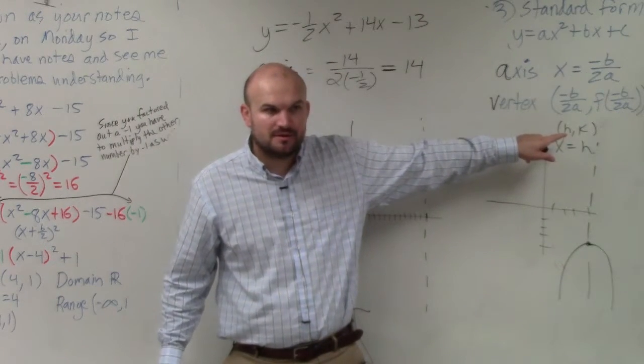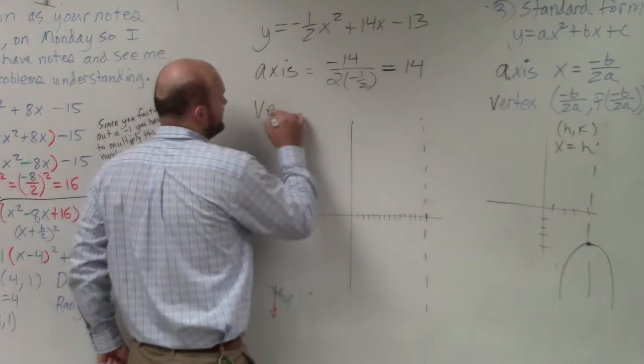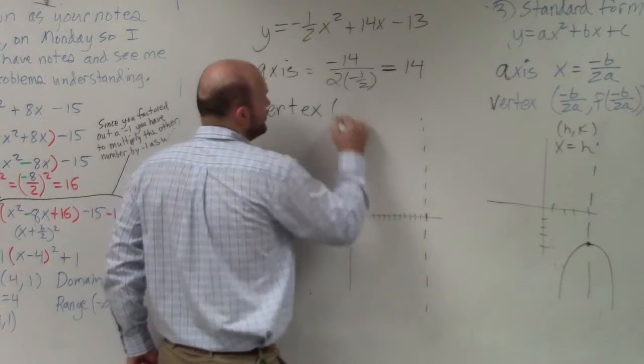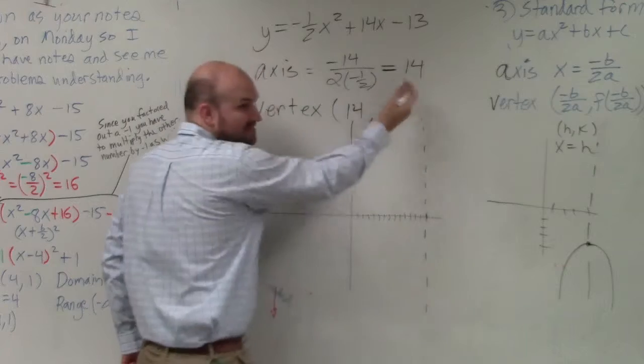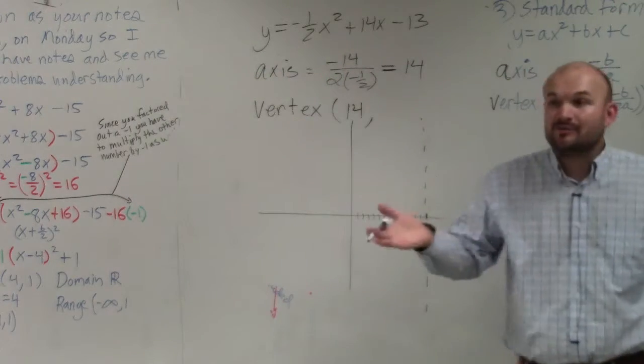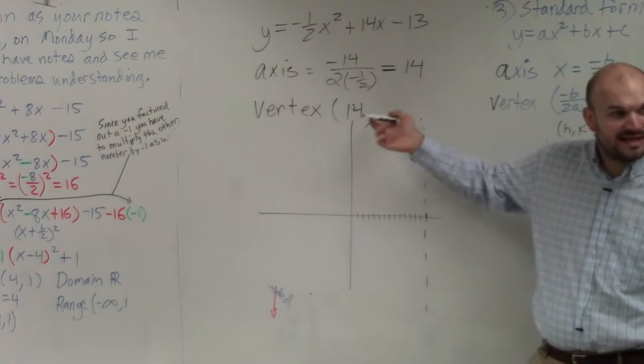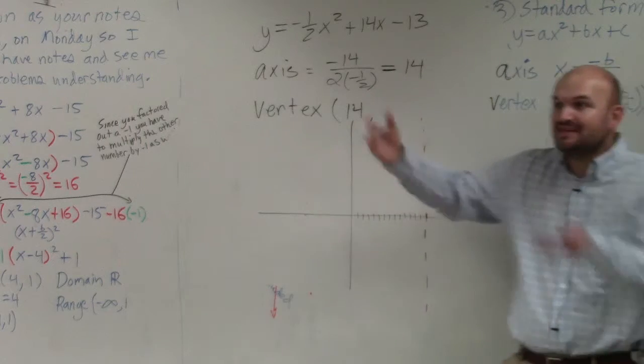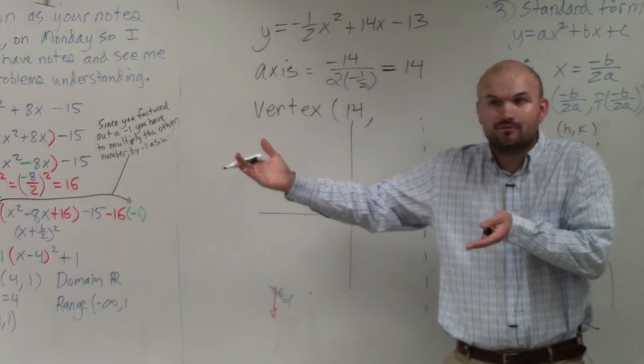Do you guys agree with me? So our vertex, if I want to find the vertex, is going to be 14 comma something. Now, how do we figure out what that is? How do we figure out what the y? If we know what the x-coordinate is, how do we find out what the y-coordinate is?